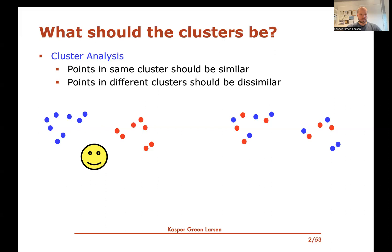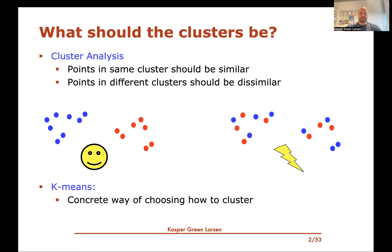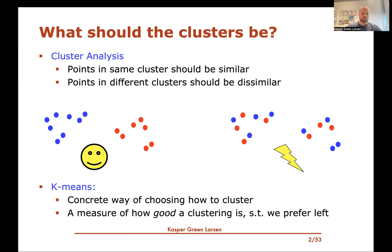We have these two different pictures of two different clusterings of the same set of points. We by far prefer one over the other — at least just looking at them as humans, the left picture appears to be the right clustering of the points. In k-means, this is basically a concrete way of choosing how we should cluster our data. K-means provides a measure of how good a clustering is, and this measure ensures that we will prefer the better clustering.